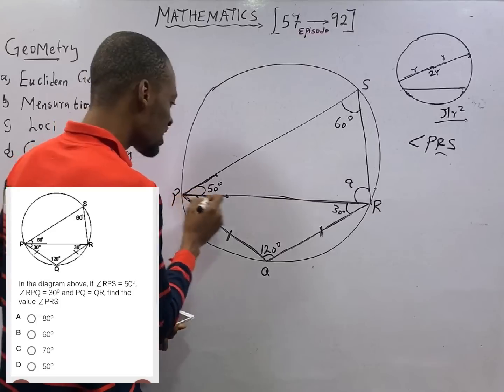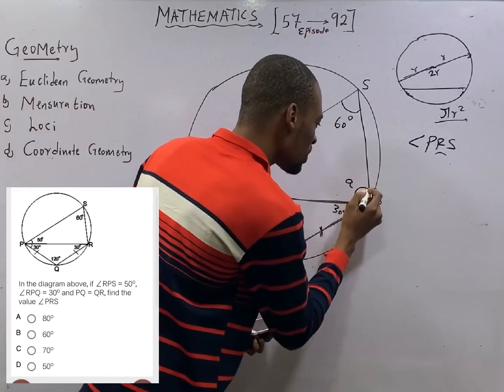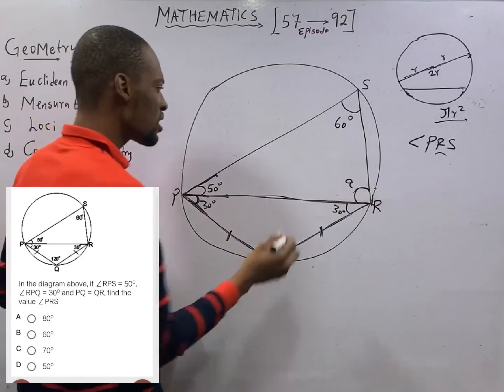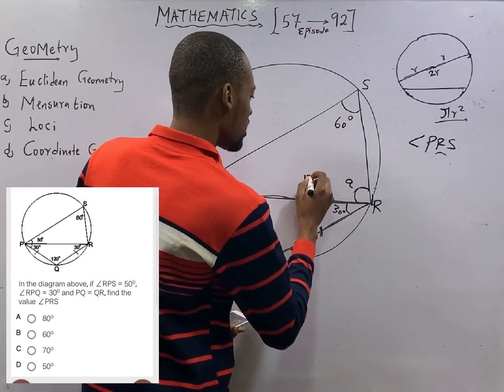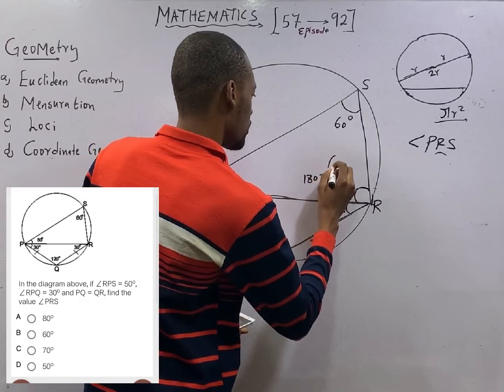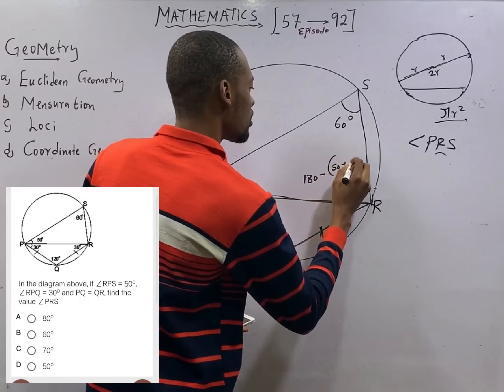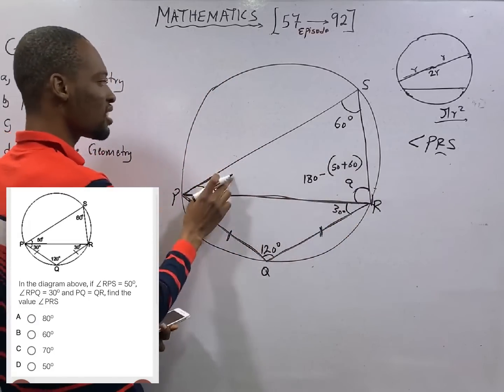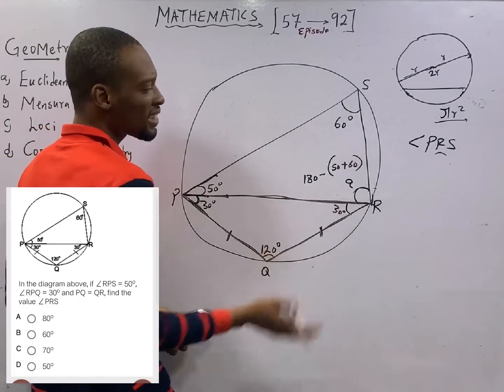Look at it. PRS, which is this angle, it is simply 180 minus 50 plus 60. Because if you add this and this and subtract from 180, you get here.